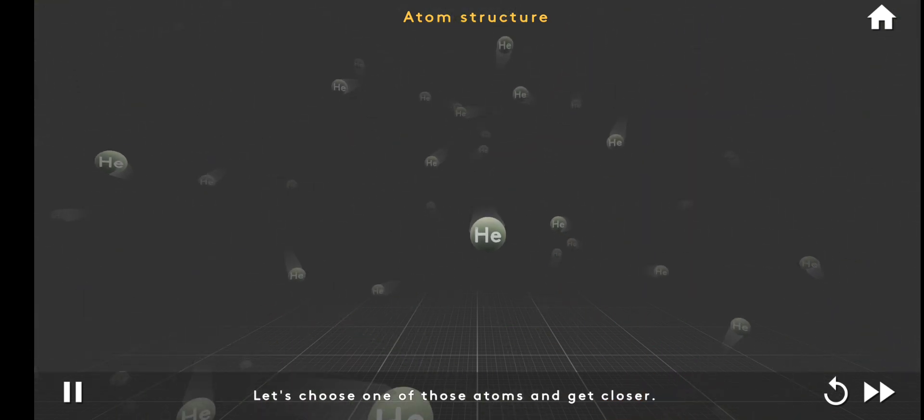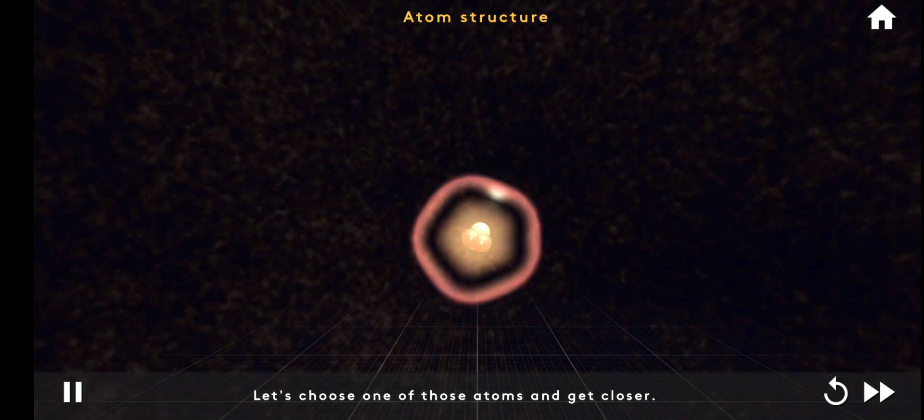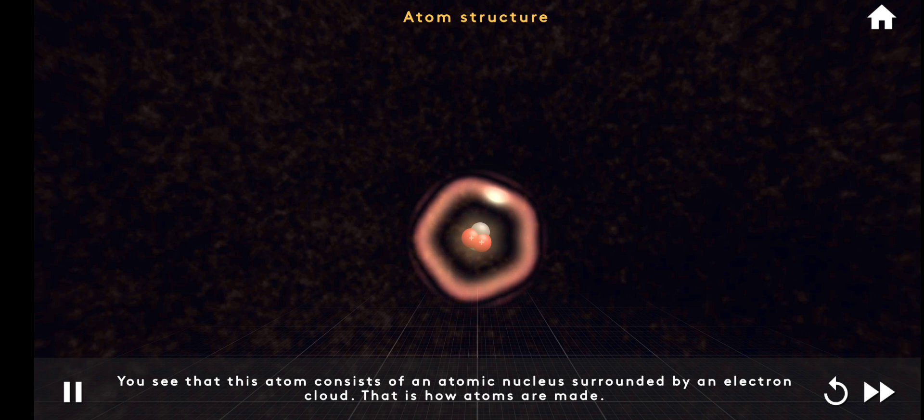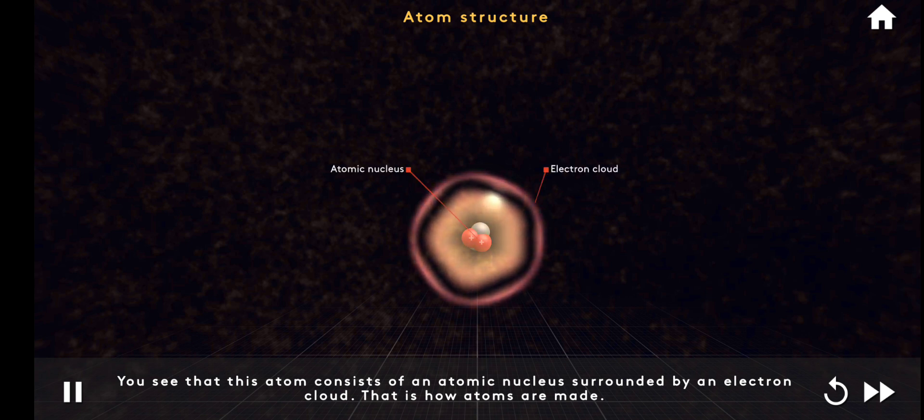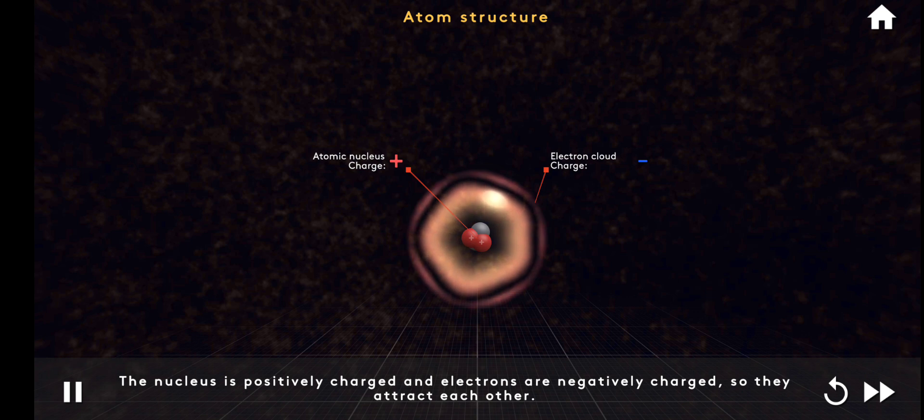Let's choose one of those atoms and get closer. You see that this atom consists of an atomic nucleus surrounded by an electron cloud. This is how atoms are made. The nucleus is positively charged, and electrons are negatively charged, so they attract each other.